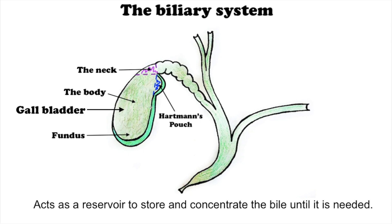The neck tapers and is continuous with the cystic duct leading into the biliary tree. The neck contains a mucosal fold known as Hartmann's pouch. This is a common location for gallstones to become lodged, causing cholestasis.